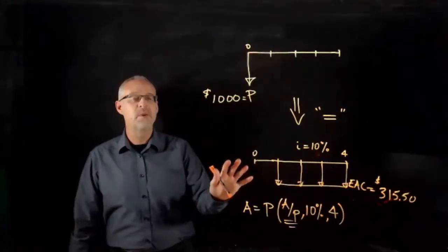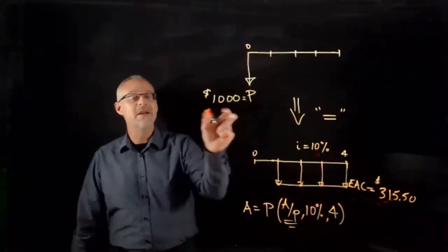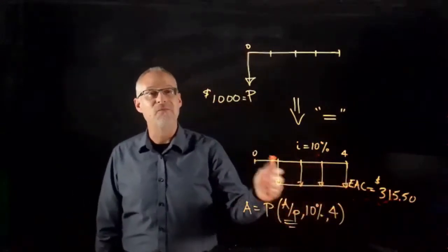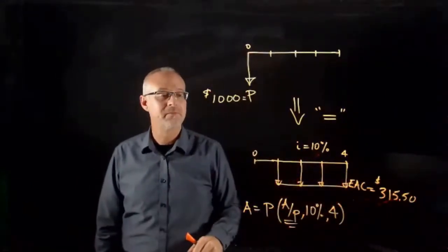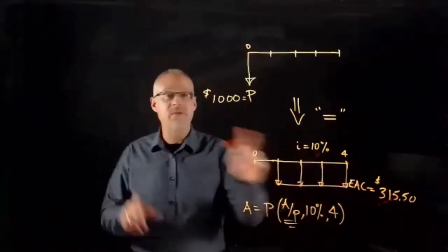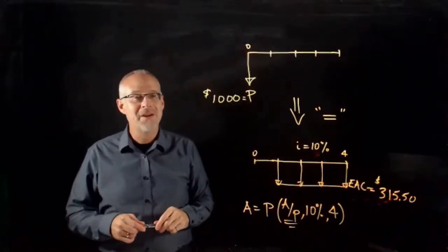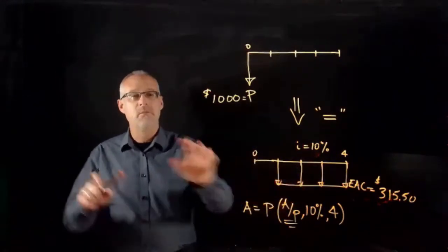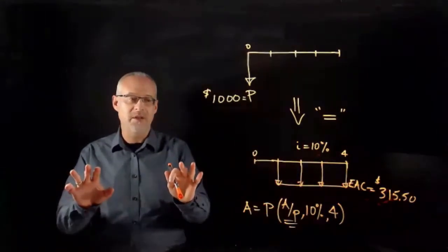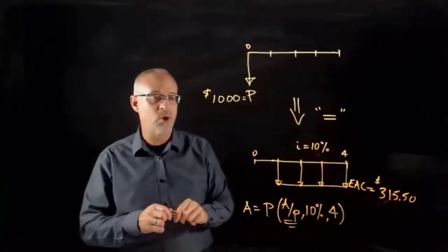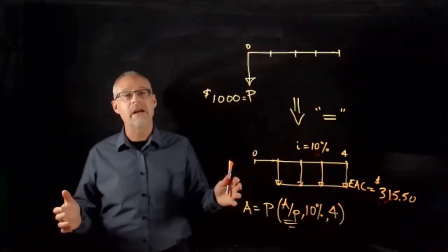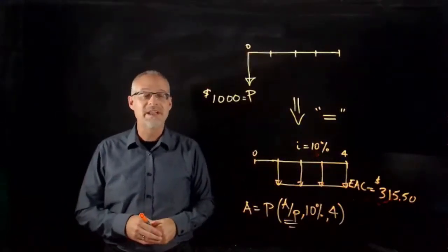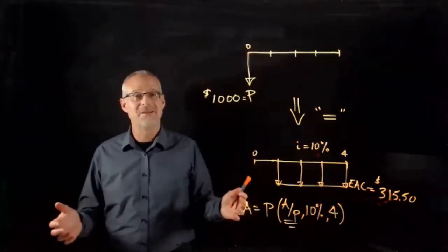The EAC is based on the concept of equivalence — in the time value of money world, I can take a P and express it as an A. For the purpose of this chapter, we use EAC instead of A. The EAC is not just for internal decision-making; it's a general concept in finance that is universally applicable — a means of spreading out cost over time, including the time value of money, and finding a common number we can use to make comparisons.